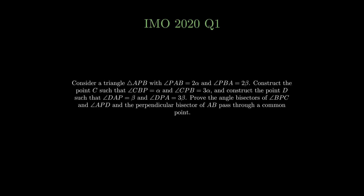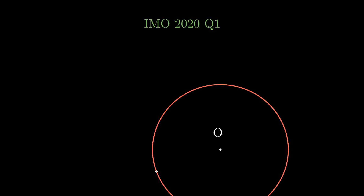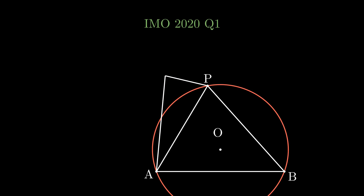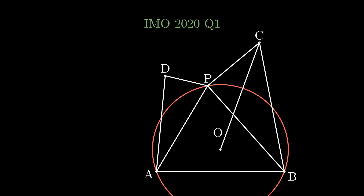Now that we have the equivalent formulation of the problem, we can solve it. Use the usual method of drawing in the circumcenter and circumcircle of the triangle APB first, and then draw in C and D. We might notice that both the angle bisectors actually pass through the circumcenter of triangle APB. This makes sense, since the circumcenter of triangle APB does lie on the perpendicular bisector of AB. So if we prove this, we're done.